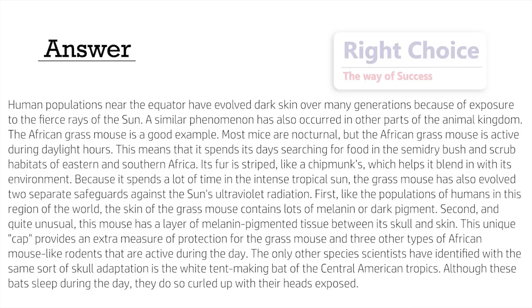Human populations near the equator have evolved dark skin over many generations because of exposure to the fierce rays of the sun. A similar phenomenon has also occurred in other parts of the animal kingdom. The African grass mouse is a good example. Most mice are nocturnal, but the African grass mouse is active during daylight hours. This means that it spends its days searching for food in the semi-arid bush and scrub habitats of eastern and southern Africa.